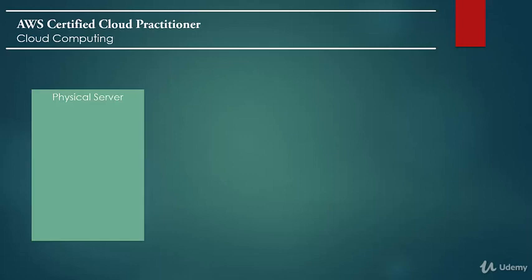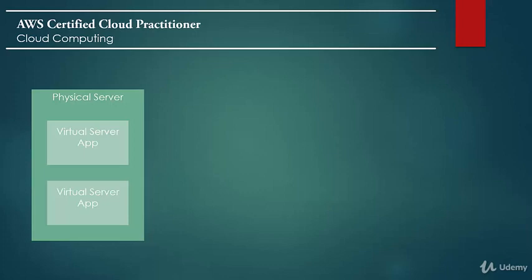First, let's say you would have a physical server, and on this physical server the trend is to have virtualization. So you would have virtual servers, and you would then host your application, your web servers, your database servers on these virtual servers. These virtual servers would then use the underlying capacity — the underlying CPU and memory. This is how you would have a typical on-premise deployment.